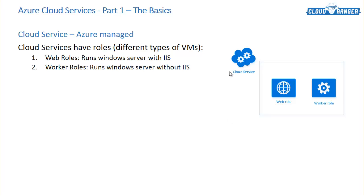This cloud service will consist of roles — or virtual machines. I was very confused when they told me that cloud services have roles. But when I actually deployed a cloud service, I found out that deploying a role is actually deploying a virtual machine. Since it's a cloud services term, you need to get used to these terminologies. Cloud services have basically two roles: one is a web role and one is a worker role.